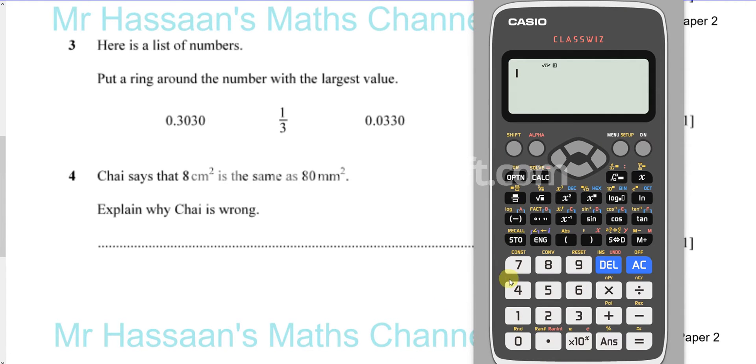Okay, so you have, you can put 1 over 3, and you press equals, and you press this S to D button. As you can see, 0.33333 recurring.